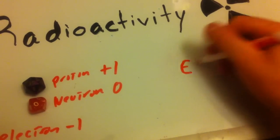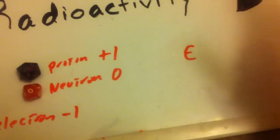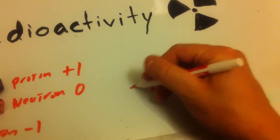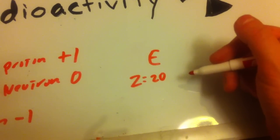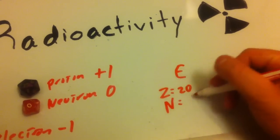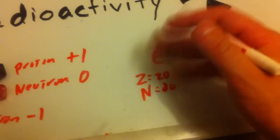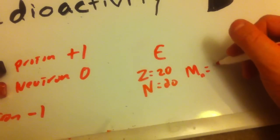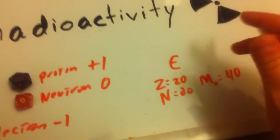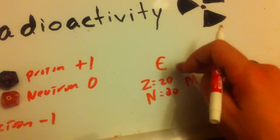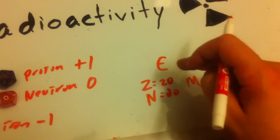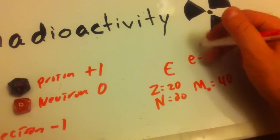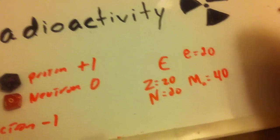Say that you have an element — we'll call it E for element. Let's say this element has 20 protons normally, and normally it has 20 neutrons. So it's a nice, equal atom, and its mass number equals 40. This element should have the same number of electrons as it does protons — it's not always true, but it's often true. So technically, the electron count should be about 20.